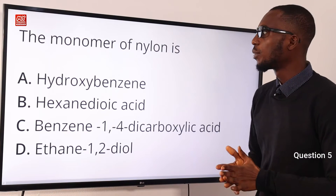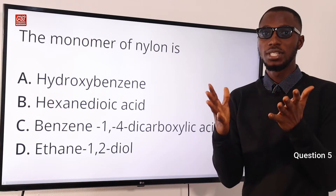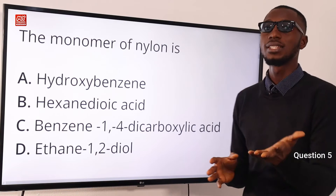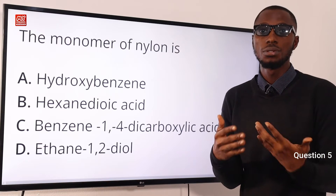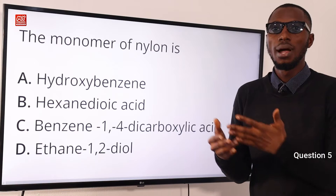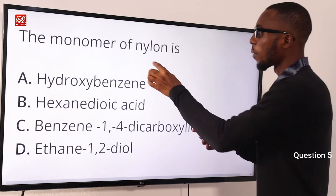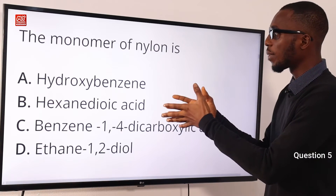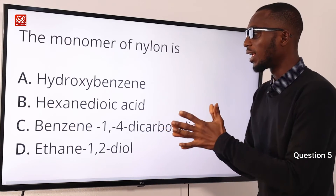Question 5. The monomer of nylon is what? Those simple molecules that come together to form giant molecules, to form polymers. The nylon in question here is nylon-66. Nylon is a very good example of thermoplastics — they can be softened repeatedly by heat and can be remolded. Nylon is gotten from the process of condensation polymerization. The monomers of nylon are hexanedioic acid and hexane-1,6-diamine, option B.